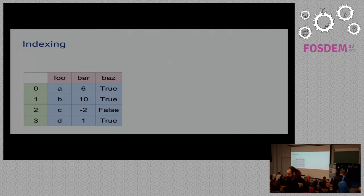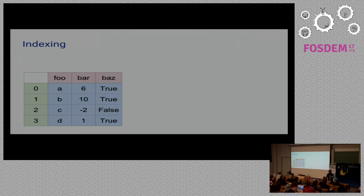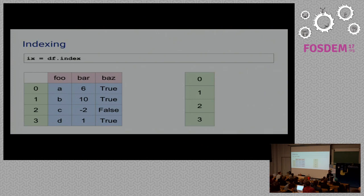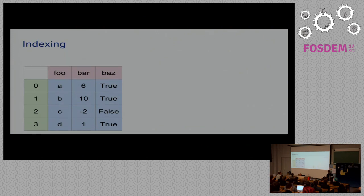Let's talk about indexing. Indices can be 0, 1, 2 or custom like ABC. For this data frame, we can fetch the index to do something with it. Indices can be anything, and this is a way to access any index of the data frame.